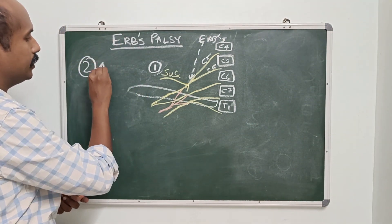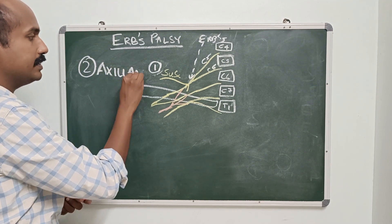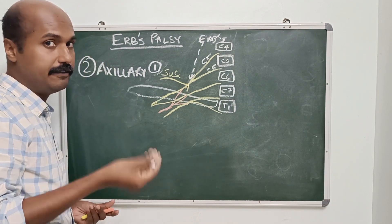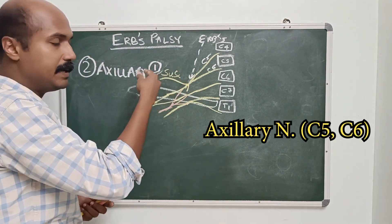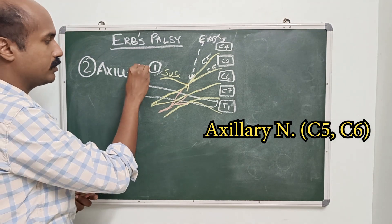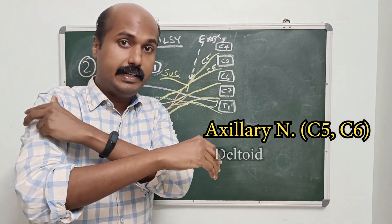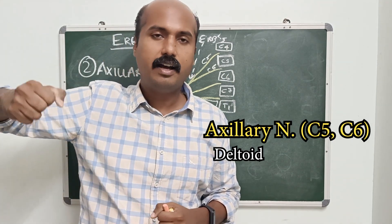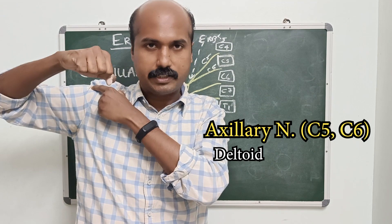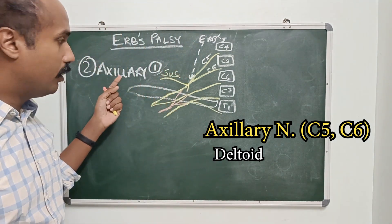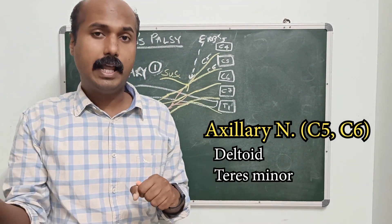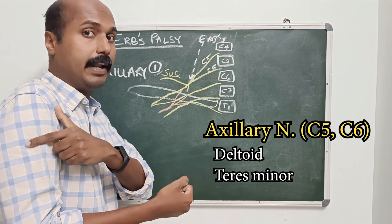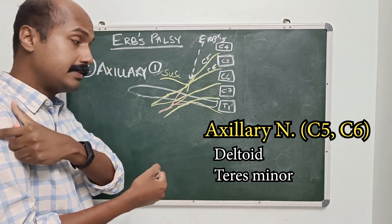Another nerve that is injured is the axillary nerve. The axillary nerve comes from the posterior cord but its root value is C5 and C6, so C5 and C6 are distributed through the axillary nerve as well. It supplies the deltoid, which is the prime abductor of the shoulder from 15 to 90 degrees. The axillary nerve also supplies teres minor, which assists in lateral rotation, and gives off the upper lateral cutaneous nerve of the arm, so it has a skin supply too.